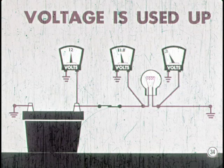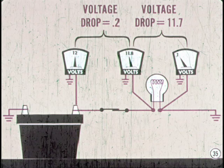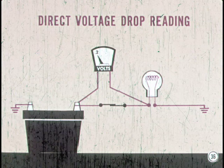Voltage is always used up in overcoming the resistance in a circuit. Voltage is not exactly the same at any two points in the circuit because a voltage drop always occurs when current is moved through a resistance. Voltage drop is the difference between the voltage available at one point in a circuit and the voltage available at another point in the same circuit. A direct voltage drop reading can be made by connecting one voltmeter lead to the battery terminal and the other lead to the lamp terminal. When a voltmeter is connected across a circuit, it registers voltage drop, not voltage available.